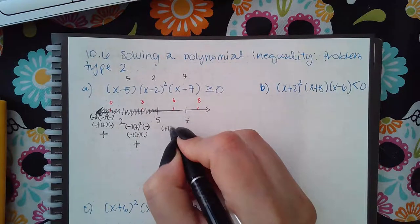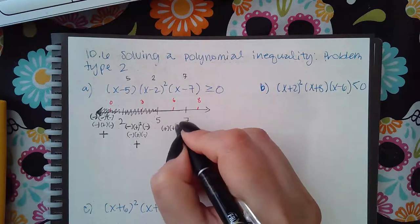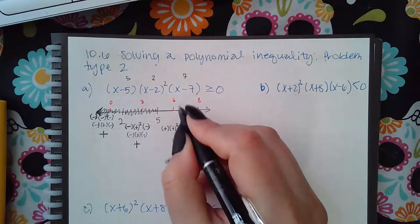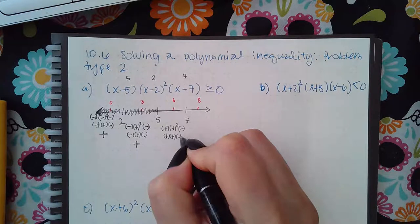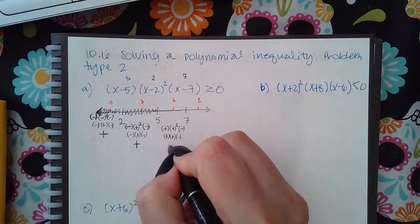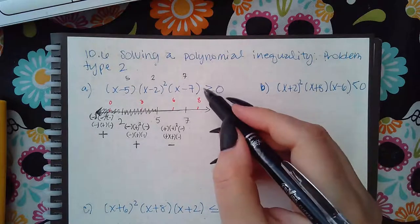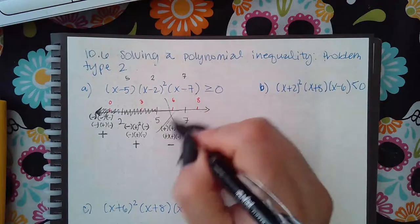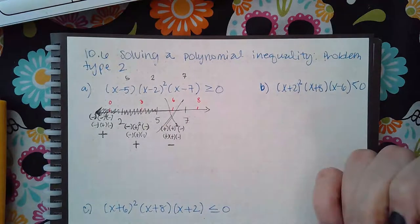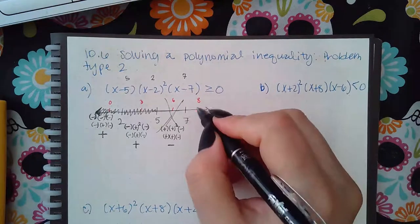Now I'm going to test 6. So 6 minus 5 is positive, 6 minus 4 is positive squared, and 6 minus 7 is negative. A positive times a positive times a negative gives a negative, and a negative is not greater than or equal to 0, so this section will not be included in my answer.